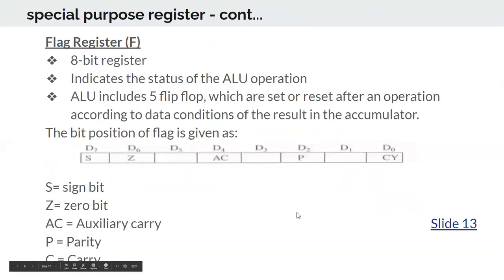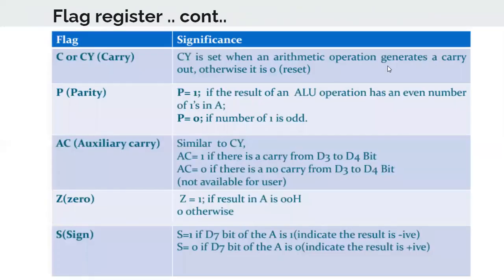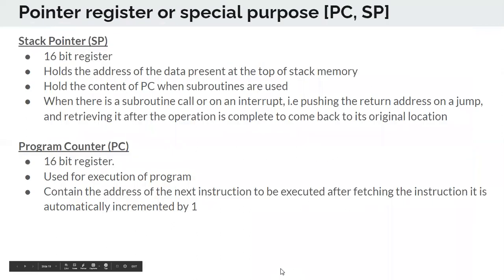We have also seen the flag register. There are five flags: sign bit, zero bit, auxiliary carry, parity, and carry flag. The respective bits will be set and reset depending upon the arithmetic operations performed. For example, the carry bit is set when the arithmetic operation generates a carry. We covered all of this in the previous video, up through the program counter and stack pointer.